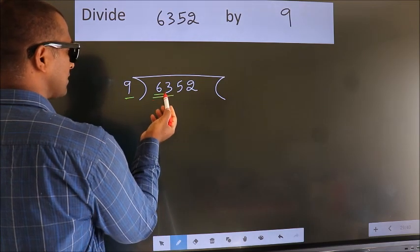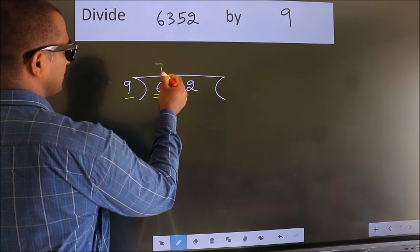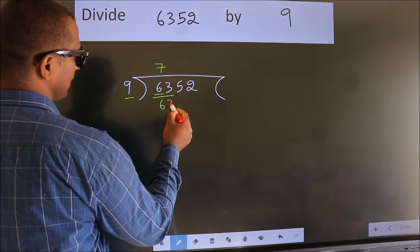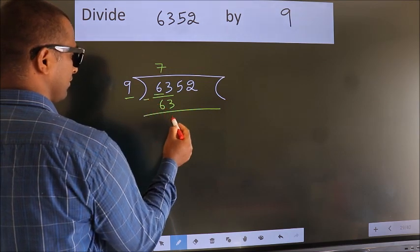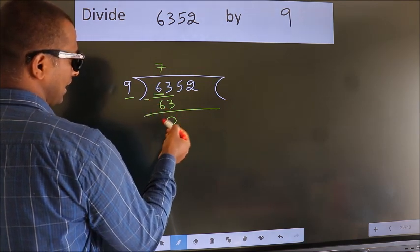When do we get 63? In the 9 table: 9 times 7 is 63. Now we should subtract. We get 0.